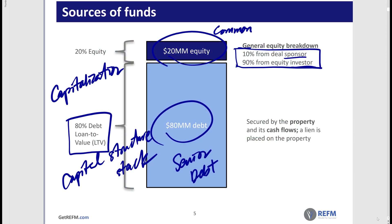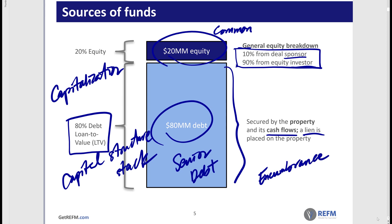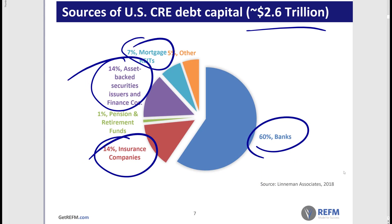The senior debt is secured by the property and, of equal importance, the cash flows that are tied to the property. A lien is placed on the property by the senior lender, which is an example of an encumbrance on the title of the property. A minority of lending comes from mortgage REITs, other players, and pension and retirement funds. All of these lending parties look at things slightly differently and underwrite or assess opportunities somewhat differently.